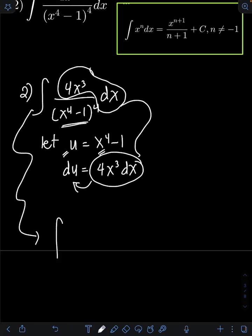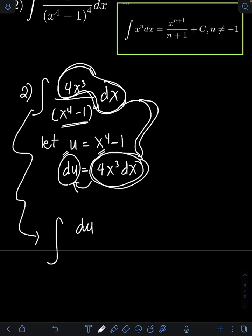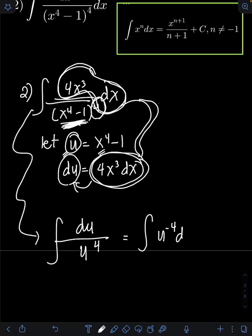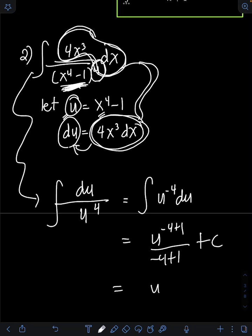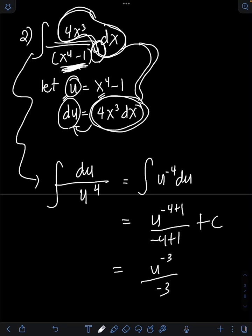Substituting into the original integral: 4x cubed dx is now equal to du, over x to the 4th minus 1, which equals u, raised to the 4th power. We can transform this using a negative exponent: 1 over u to the 4th is the same as u to the negative 4 du. Applying the power formula: integral of u to the negative 4 du equals u to the negative 4 plus 1, over negative 4 plus 1, plus C. That gives u to the negative 3 over negative 3, plus C.